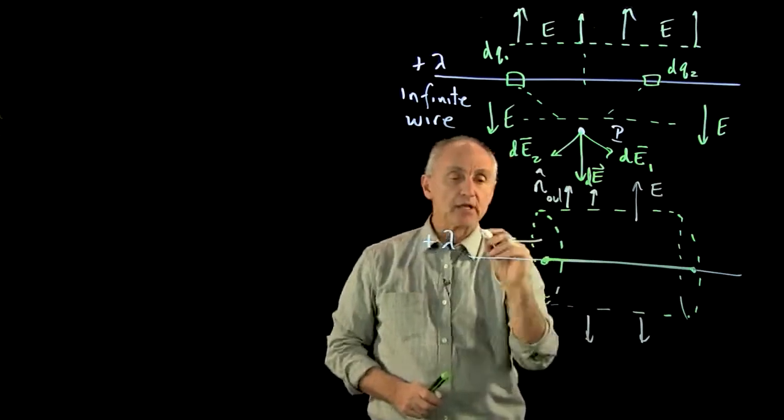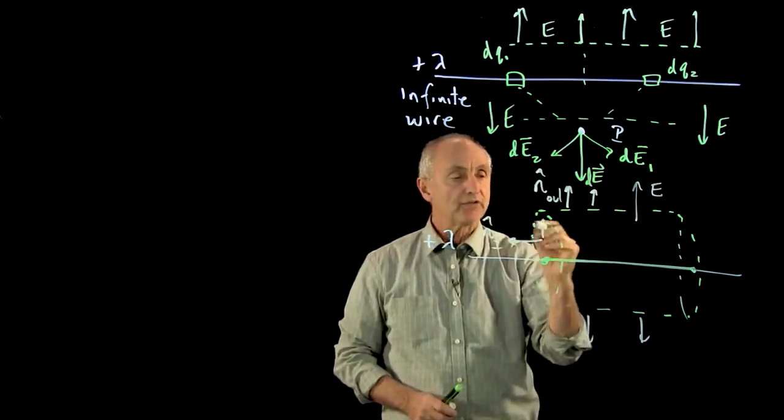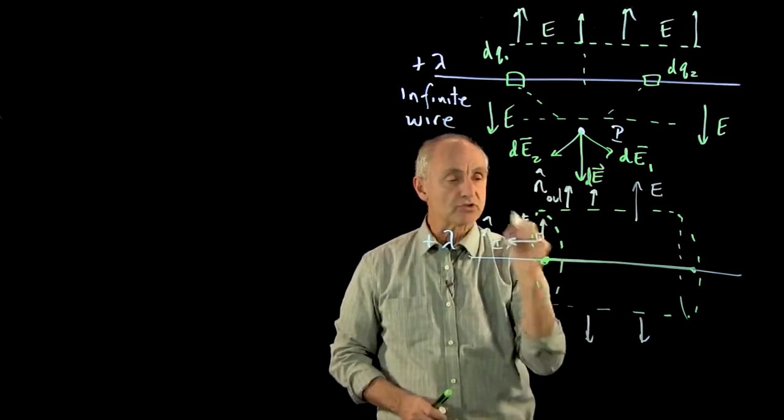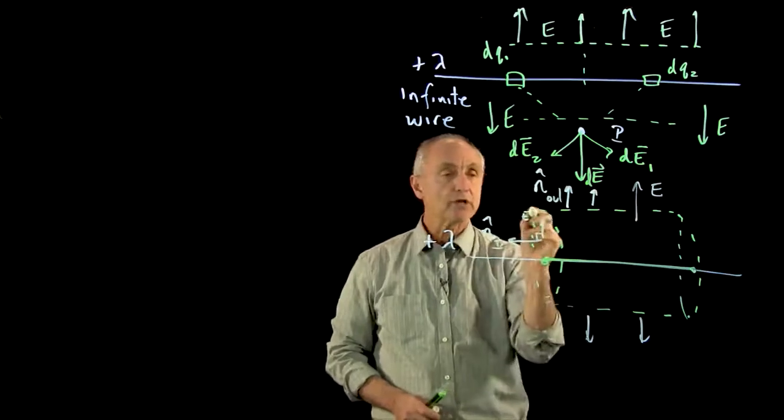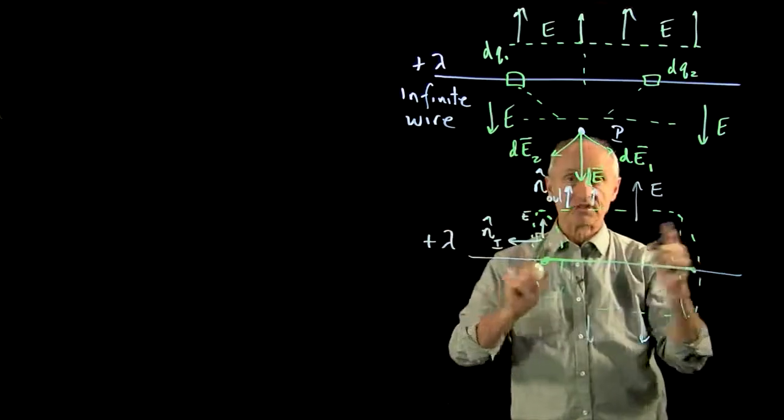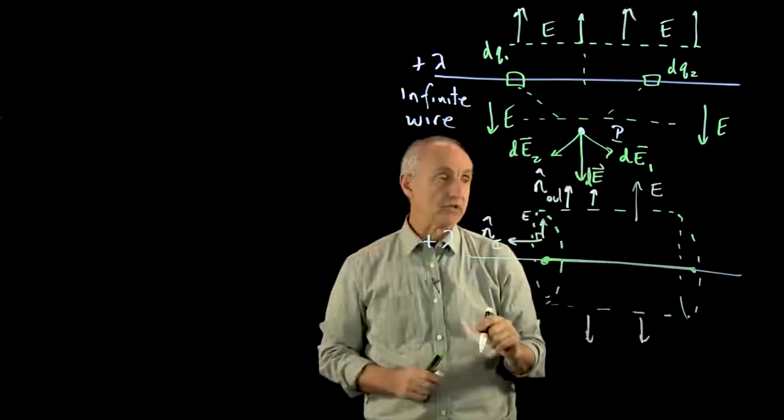On the end sides, call that dE1, the electric field here is tangent to the surface. So there's no flux through the end caps. This is exactly opposite the planar case.